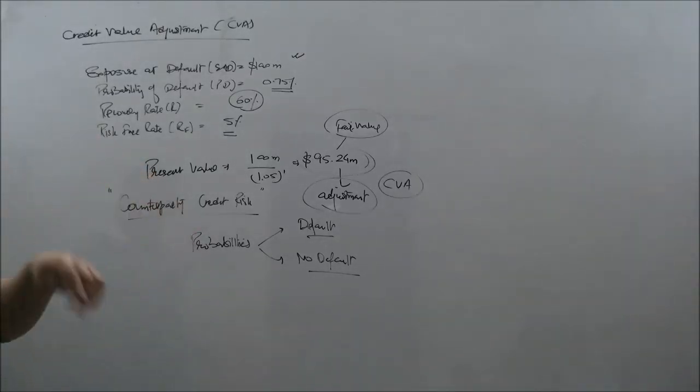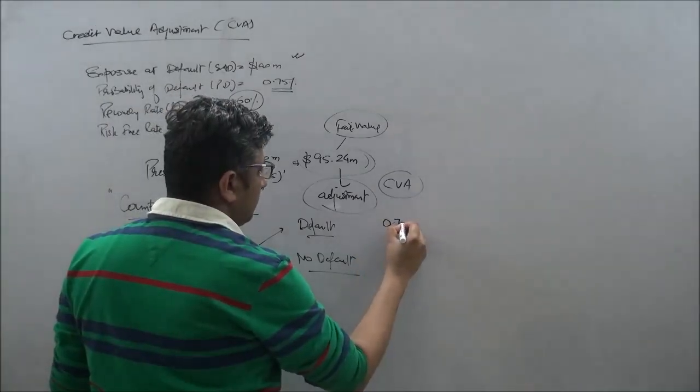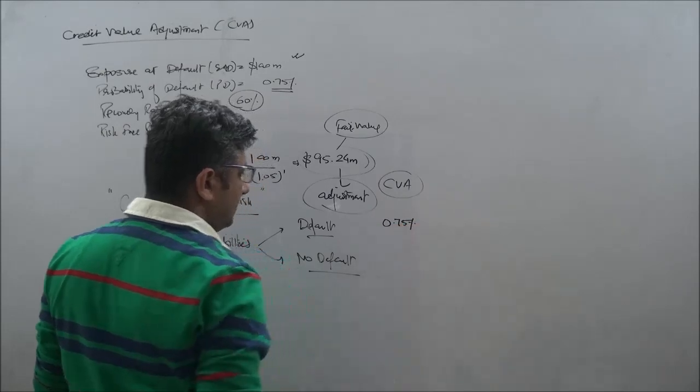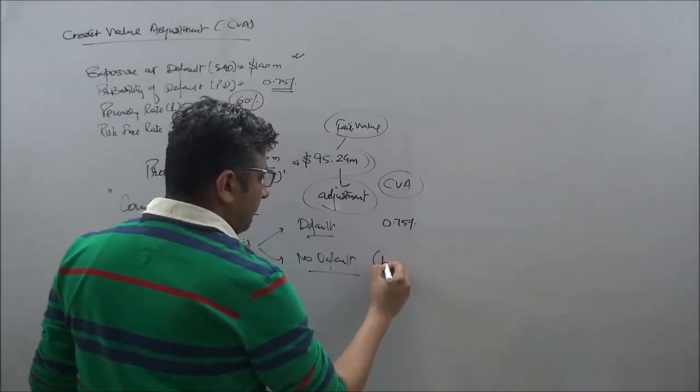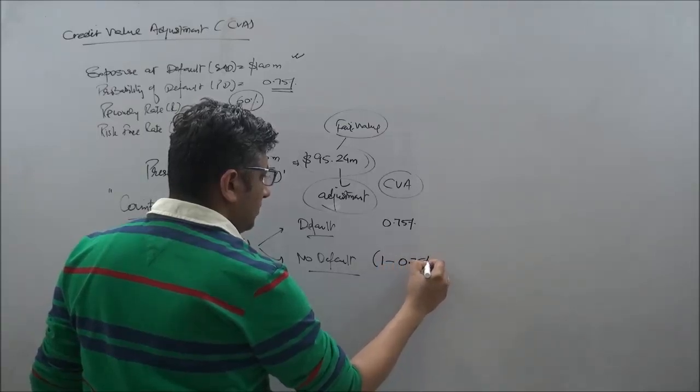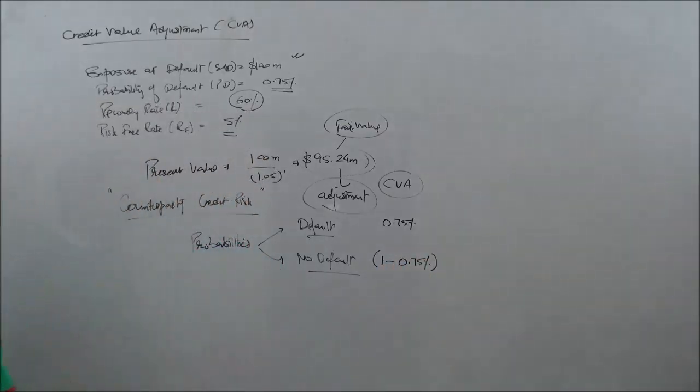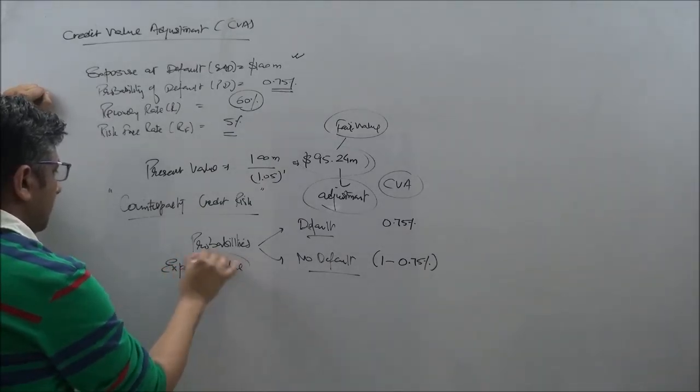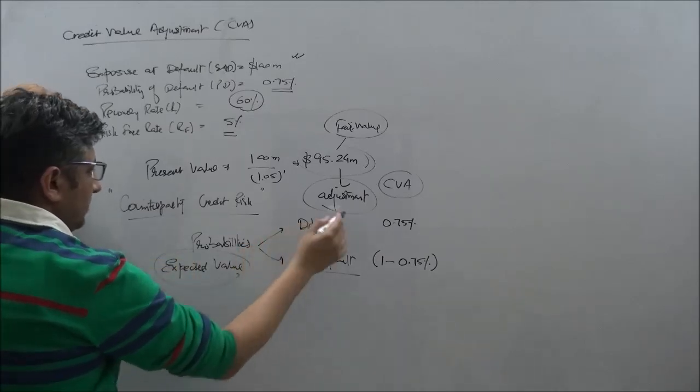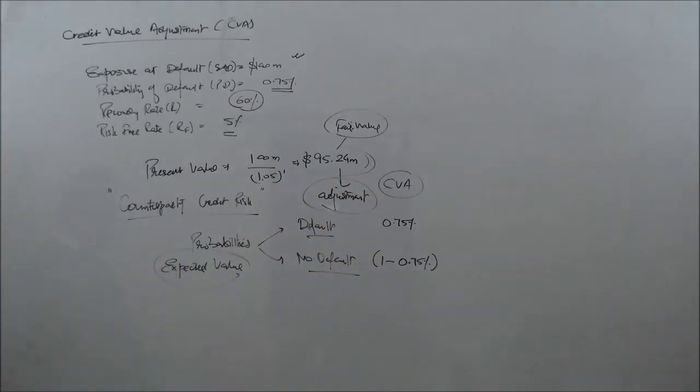What we are saying is, what if a default happens? We are given of course the probability of default at 0.75%, but what if default does not happen? Then the probability would be 1 minus the probability of default, which is 1 minus 0.75%. So we need to bring the expectations on that or the expected value looking at these two possibilities through the binomial model.